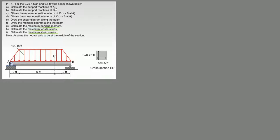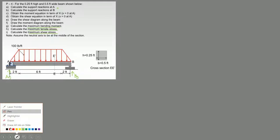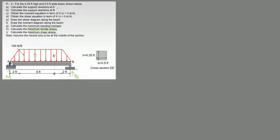With any good problem we always have to calculate the reactions first. In this case we have the vertical reaction BY and a vertical reaction AY, and there's no horizontal reaction because we've got a pin and a roller. We have a symmetrical load and a symmetrical reaction force. Usually we would have to calculate the moment at point A or point B and then use a summation of FY to find the opposite force, but in this case since our load is symmetrical we don't have to do that.